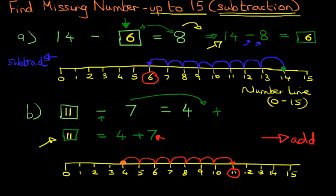So those are two different examples where the missing number is in different positions. As I've said before, reorder the question, but make sure you do this correctly. Once you do that, the rest of it is easy. So that is how we find the missing number for numbers up to 15 looking at subtraction questions.